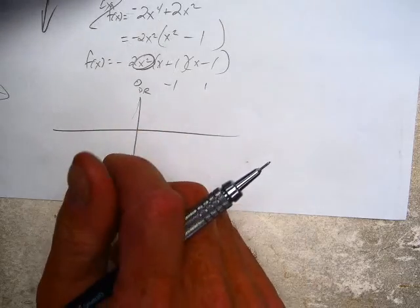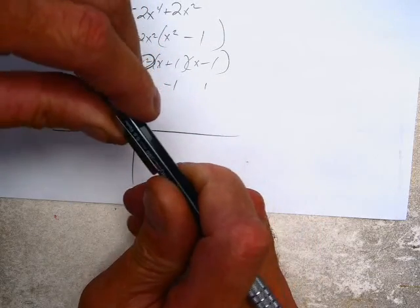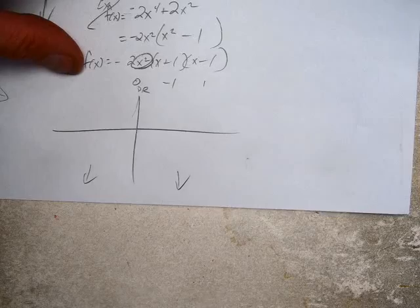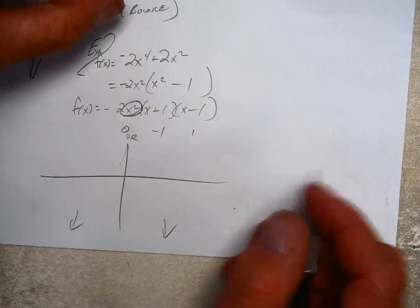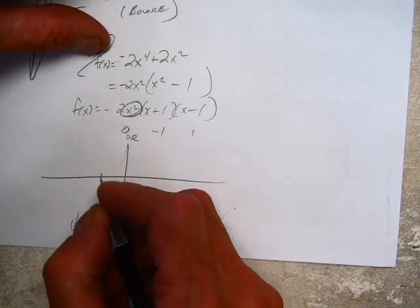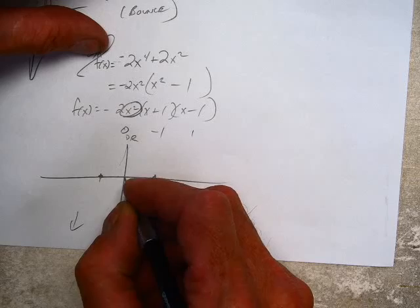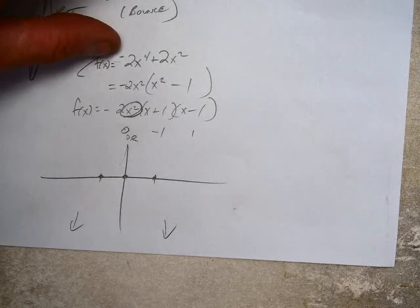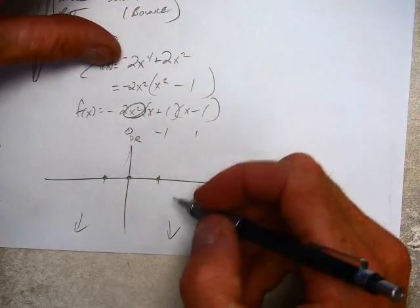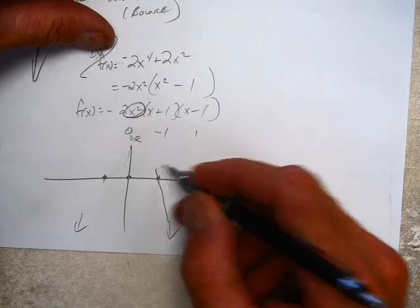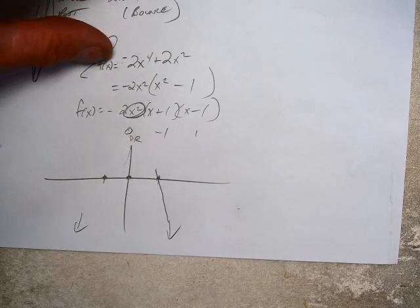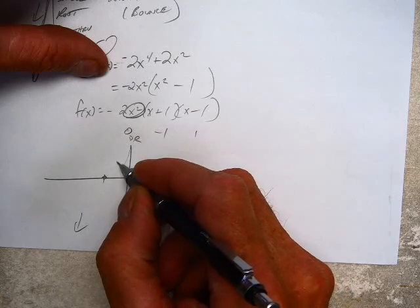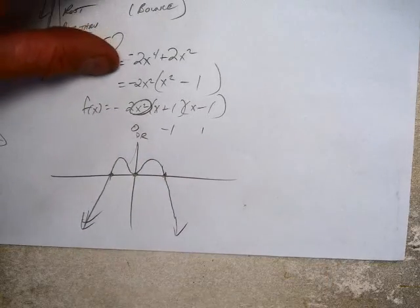So now let's graph it. Negative 2x to the fourth, disco, touchdown, what do you got? Down or up? Down. So let's start with our end behavior. What are my x-intercepts? Negative 1, 1, and zero. So now as we graph this, we need to know is it going to pass through these points? Is it going to bounce at these points? What's it going to do at 1? Pass through. It's a single root. What's it going to do at zero? It's going to bounce. And then what's it going to do at negative 1? Pass through. There you go.